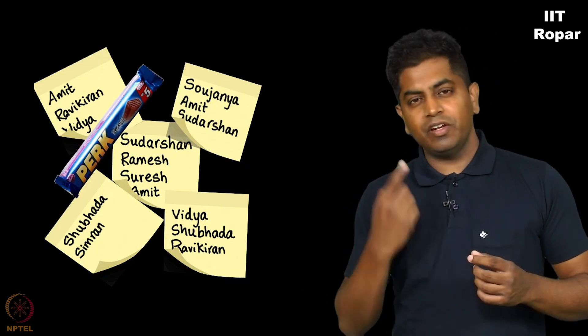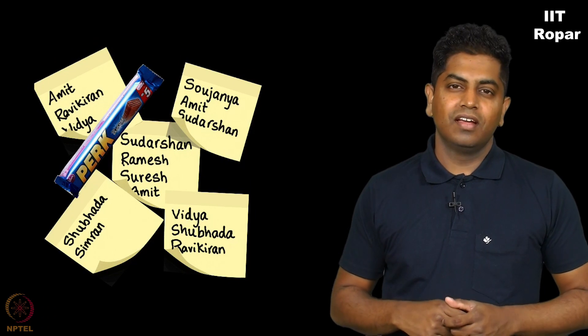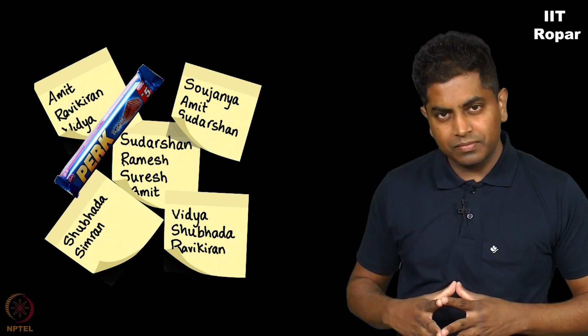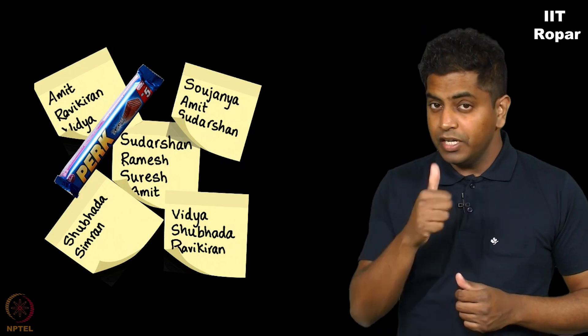But at the same time if everyone only included their names, nobody else will get elected. So they would include other's name as well. So do you see a kind of relation happening here?